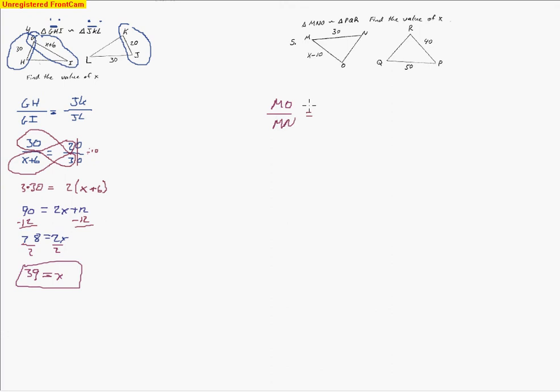Let's see which side corresponds to MO. Well, look at what the triangle tells us, the naming of the triangle. MO is the first and the last point. That means it corresponds to PR. So I'll put PR on the top and then MN. So MN are the first two points, so that means that corresponds to PQ. Now we're ready to substitute the numbers in. So MO was the x minus 10, the MN was 30. And on the other side, the PR is 40 and the PQ is 50.